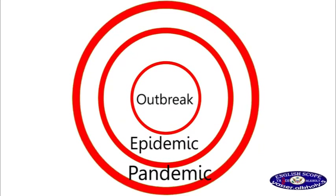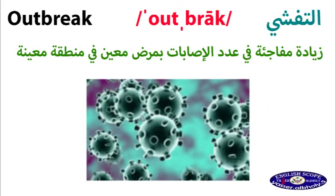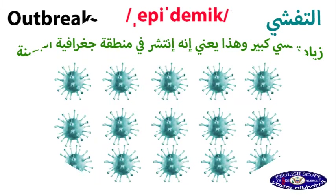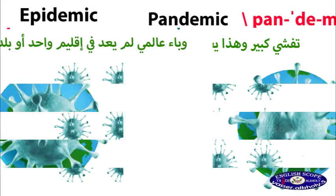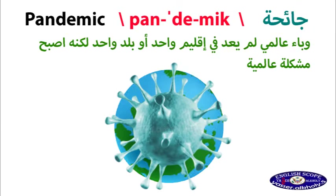To help you memorize these words, imagine that you have a target — a central point, as in the picture. Outbreak is a sudden increase in the number of cases of a disease in a particular place. Epidemic is a large outbreak that takes up a larger geographic area. Pandemic is a global epidemic.